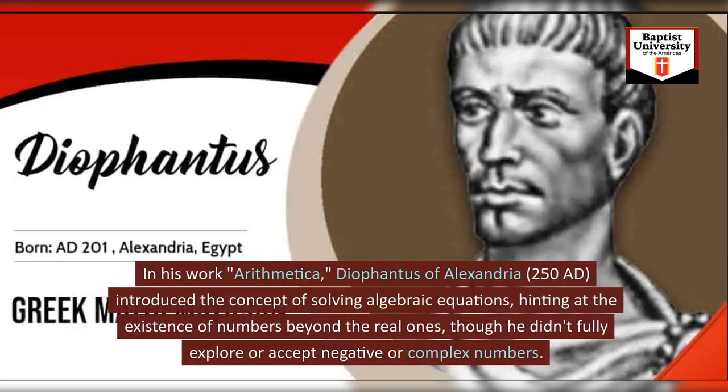In his work Arithmetica, Diophantus of Alexandria, 250 AD, introduced the concept of solving algebraic equations, hinting at the existence of numbers beyond the real ones, though he didn't fully explore or accept negative or complex numbers.